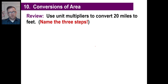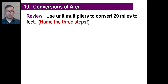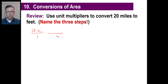Let's go to the second part of this chapter, which is called conversions of area. First off, we're going to do conversions of length — just one dimension. Use unit multipliers to convert 20 miles to feet. The first thing you do — no thinking required. You just write what you are given: 20 miles. Second step, you multiply by something. What is guaranteed to be in the denominator of that fraction? Miles. We're converting to feet, so one mile is equal to 5,280 feet.